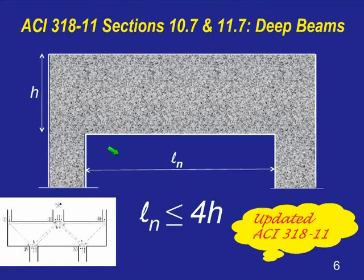A lot of people think strut and tie is just for deep beams — that's false, but it's a good starting point. Strut and tie is a holistic method that can be used for any type of structure, but it is primarily used for deep beam elements. In ACI 318, specifically section 11, they've defined deep beams as those where the clear span is less than four times the height of the beam, such that these struts and ties may develop.